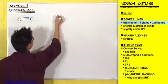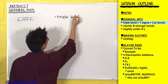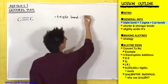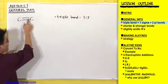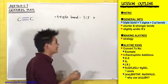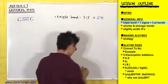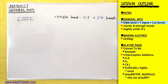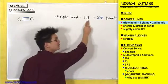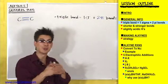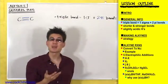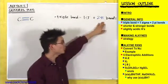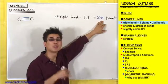Write this down: a triple bond is one sigma bond plus two pi bonds. Sigma single bonds are formed by overlapping hybridized orbitals, whereas pi bonds — multiple bonds — are formed by overlapping unhybridized pure p orbitals. Sigma single bonds are the bonds that first connect atoms together; multiple bonds go on top of those single bonds and are formed by overlapping pure p orbitals.